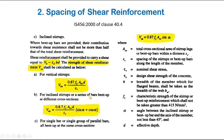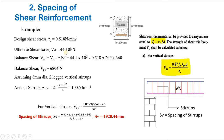For inclined stirrups or a series of bent-up bars, a separate formula applies, and for a single bar or single group of parallel bars, yet another formula is used. Here ASV is the total cross-sectional area of stirrups, SV is the spacing of stirrups, τv is the nominal shear stress, τc is the design shear strength of concrete, b is the width of the beam, fy is the characteristic strength of the stirrups, α is the angle between inclined stirrups and the axis, and d is the effective depth.